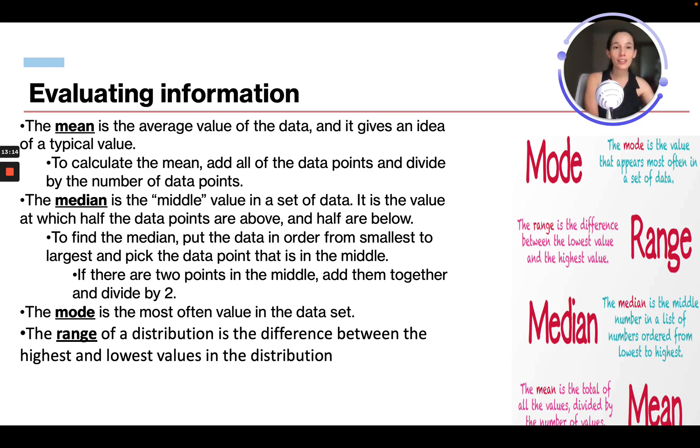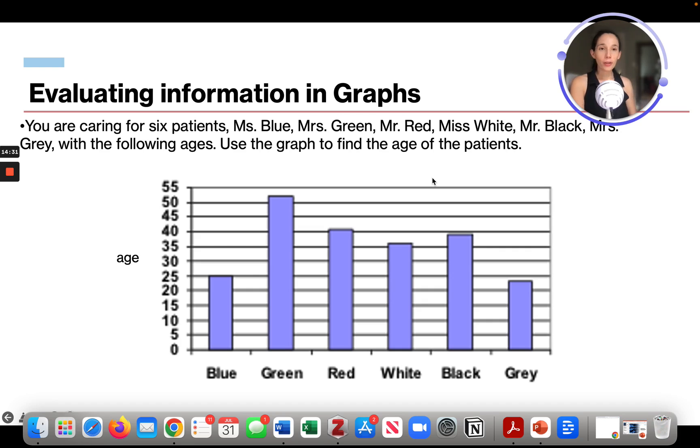So say you have 10 data points, and most of them are different, except you have three that are the exact same. Say all three are the number seven. That's going to be your mode because it's listed three times, and no other number is listed three times. And the range of a distribution is the difference between the highest and lowest value. So you take your highest and lowest value and find the difference. You subtract them, and that's going to be your range. Now we're going to evaluate information in graphs.